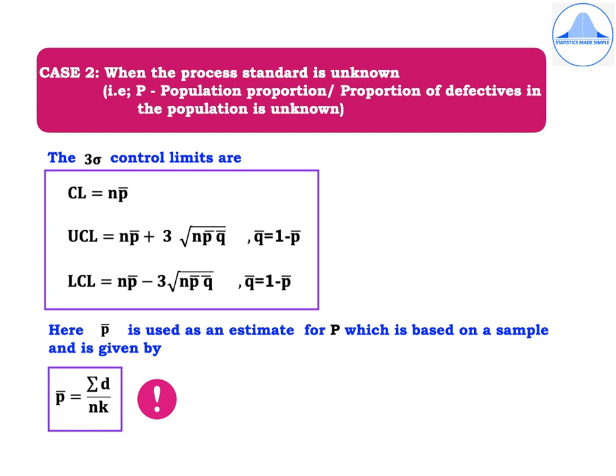LCL equals NP-bar minus 3 times root NP-bar Q-bar, where Q-bar equals 1 minus P-bar. Here P-bar is used as an estimate for P which is based on a sample and is given by P-bar equals summation D divided by NK.